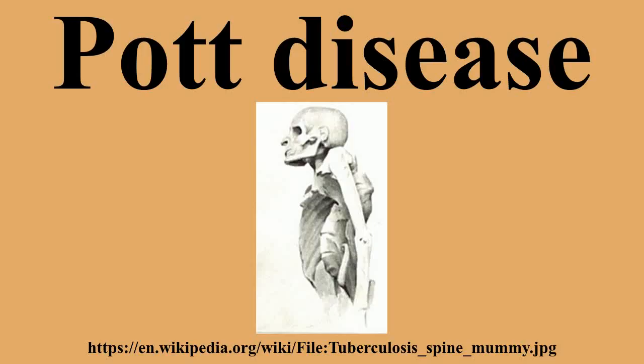Pott's disease is a form of tuberculosis that occurs outside the lungs, whereby the disease is seen in the vertebrae. Tuberculosis can affect several tissues outside of the lungs including the spine, a kind of tuberculosis arthritis of the intervertebral joints. The disease is named after Percival Pott, a British surgeon. The lower thoracic and upper lumbar vertebrae are most often affected. The formal name is tubercular spondylitis, most commonly localized in the thoracic portion of the spine.